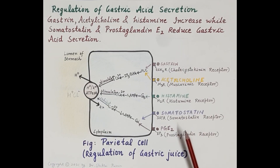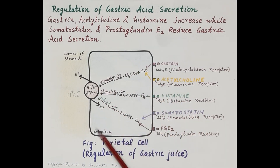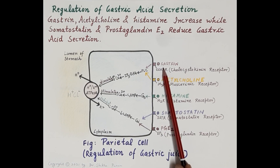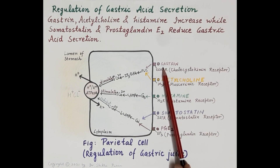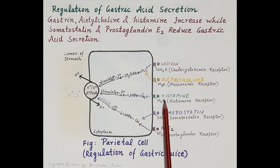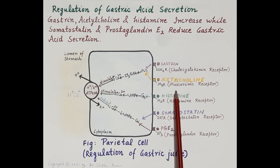Now let's study the different secretions that stimulate or inhibit the parietal cells. Gastrin is a peptide hormone released by G cells located in the pyloric antrum region of the stomach. Acetylcholine is a parasympathetic neurotransmitter released by stimulation of the vagus nerve. Histamine is produced by enterochromaffin-like cells located at the base of the gastric glands.